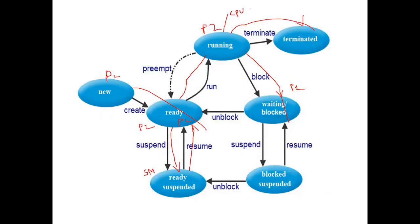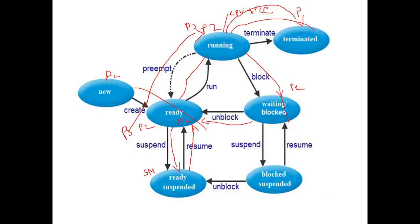Since P2 has moved to the waiting state and the CPU is free, the short-term scheduler selects the next process P3 and sends it to the running state. P3 executes while P2 waits for its resources. When P2 finishes using the resources, it is sent back to the ready state. Once P3 finishes its execution it terminates, and then P2 is given a chance for execution.